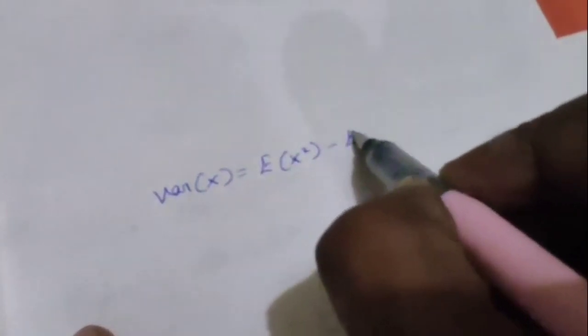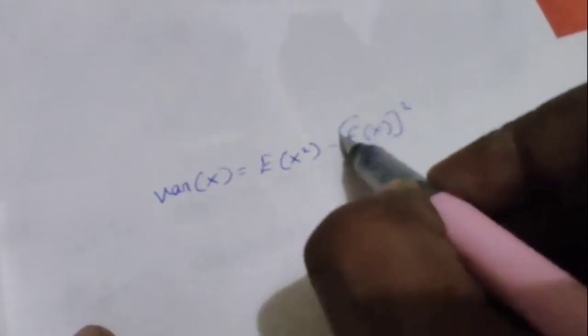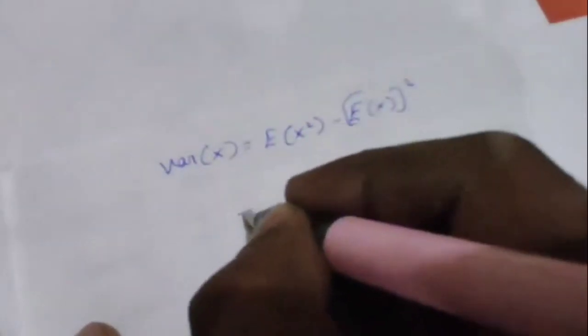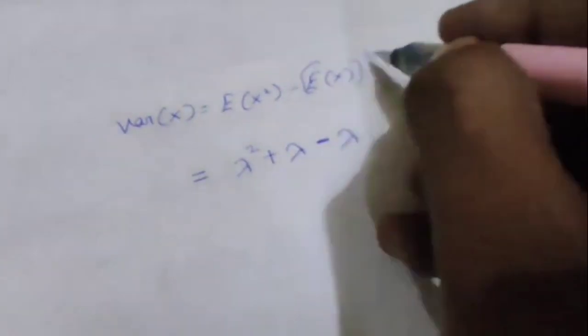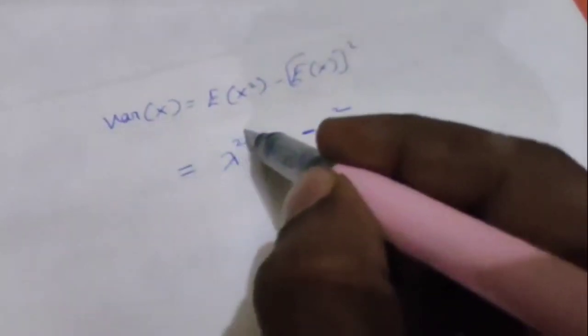Now substituting into the variance formula: variance equals E of x squared minus E of x whole squared equals lambda squared plus lambda minus lambda squared. The lambda squared terms cancel, giving variance equals lambda.